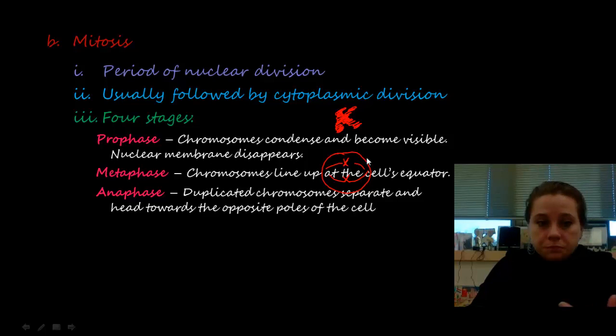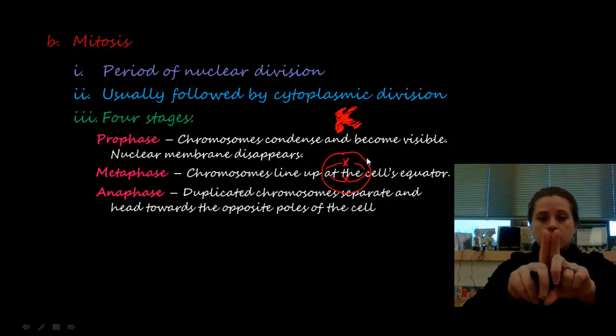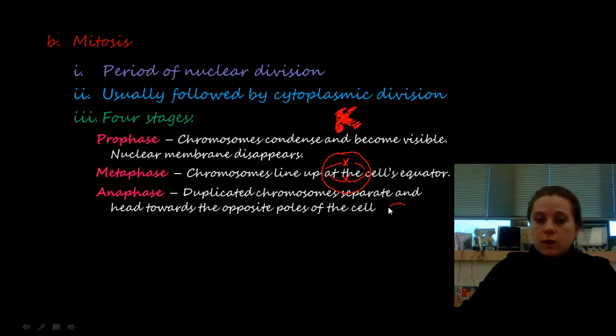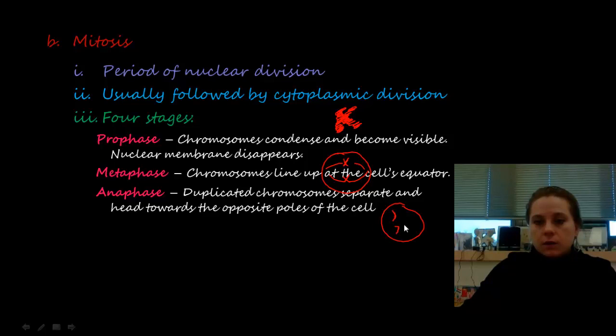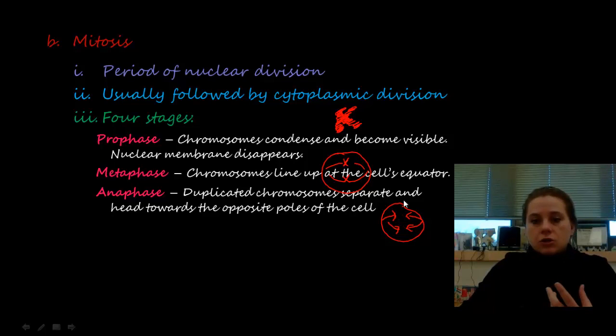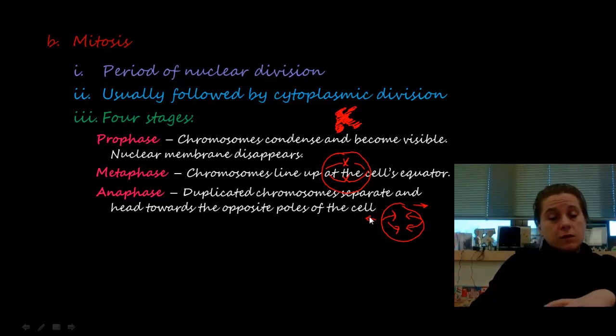During anaphase, each duplicated chromosome — attached at the middle of the cell — breaks apart. One copy heads toward one end of the cell and the other heads toward the opposite end, moving toward what we call the poles. So if there are two chromosomes in the cell, each pair pulls apart toward opposite sides, so that when the cell splits each new cell has what it needs.